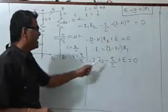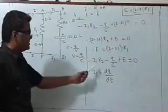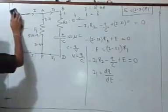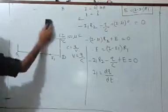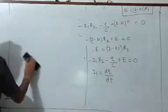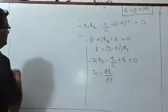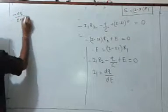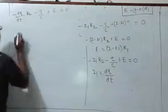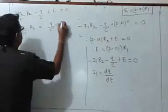The rate of change of flow of charge is current, so for I1 I can write dQ by dt. Substituting I1 equals dQ/dt into the equation and rearranging terms, we get: minus (dQ/dt) into R2, minus Q upon C plus E equals zero. Rearranging: (dQ/dt) into R2 equals E minus Q upon C, which can be written as (CE minus Q) upon C.